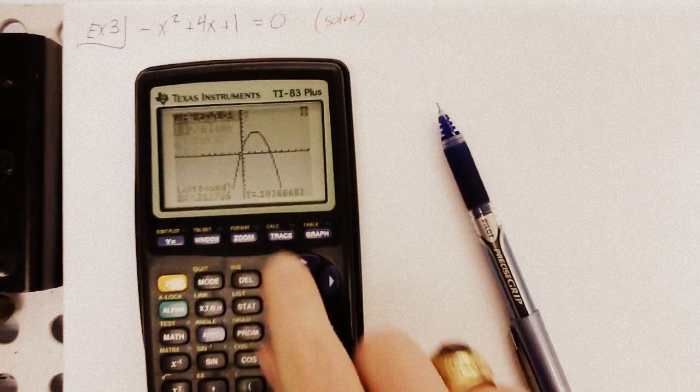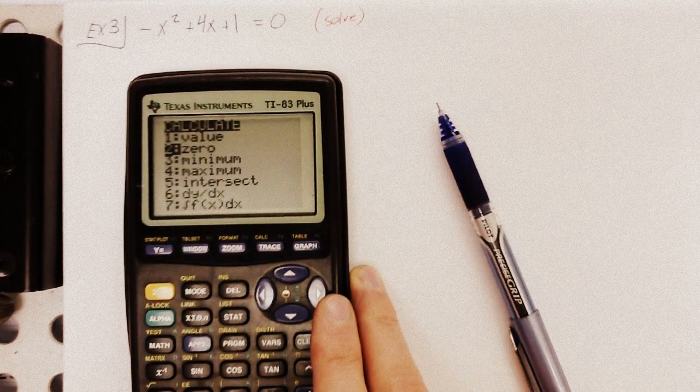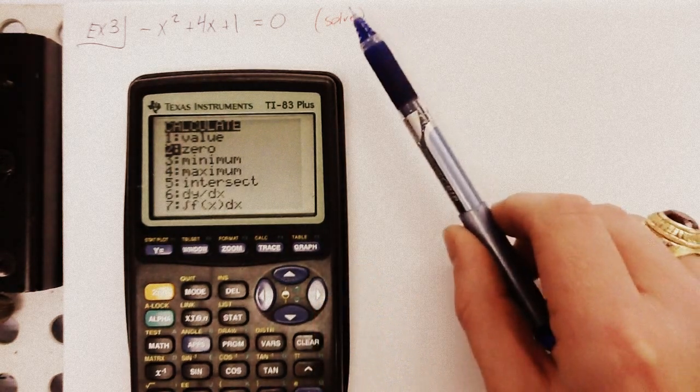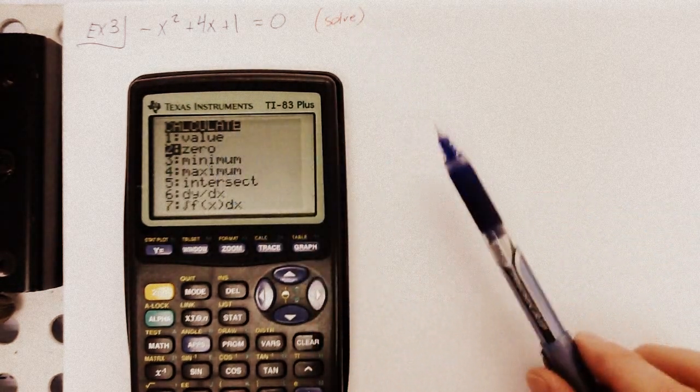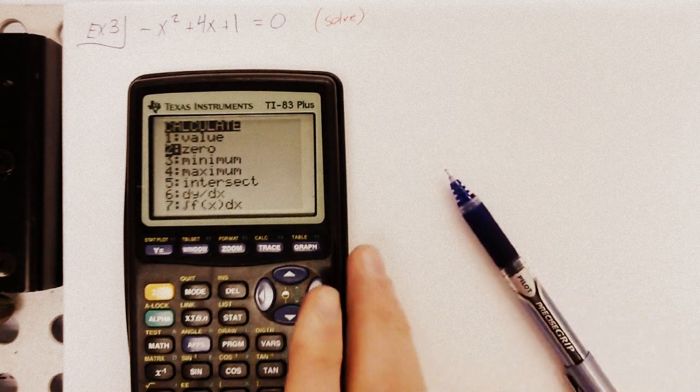Let me back up. The reason I said zero, remember, zero, solution, root, all mean the same thing. If we're finding the solution, we're solving, that's the same thing as finding zero, or a root, or an x-intercept. It's all the same thing. All right. So, zero.